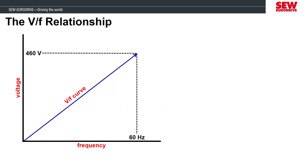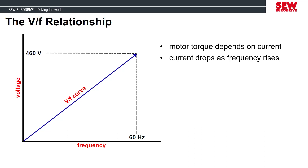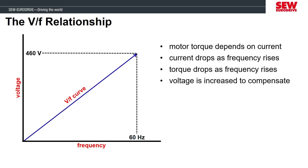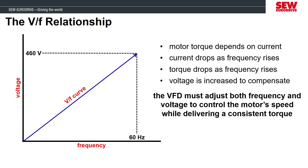Motor torque is dependent on how many amps are flowing through the windings, but there is a problem: as we increase the frequency to make the shaft turn faster, the motor windings start to oppose current flow. The higher the frequency commanded, the lower the current wants to be. If the current goes down, output torque also goes down. This isn't useful because we want the motor to deliver maximum rated torque at its maximum rated speed. So we compensate for the dropping current by steadily increasing the voltage in the motor as frequency increases. If we steadily increase the voltage, we can maintain a somewhat constant current, keeping the motor delivering constant torque through the speed range.